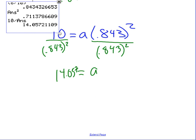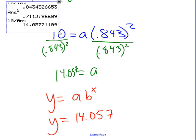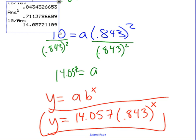Put it all together now. y equals a times b to the x. So therefore, y equals 14.057 times 0.843 to the x. And there is our exponential equation.